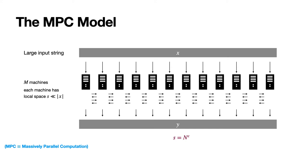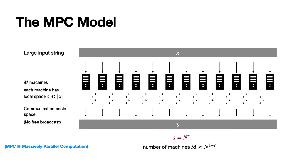To be more specific about the parameters: the local space of each machine, s, is defined to be n to the epsilon, where n is the total input size and epsilon is a small constant less than 1. It follows naturally that the number of machines m is around n to the 1 minus epsilon. An important detail is that each message sent and received by a machine is counted against that machine's space budget, which means that there's no broadcast because it would involve a cost linear in n.